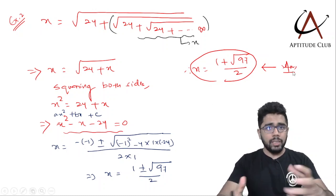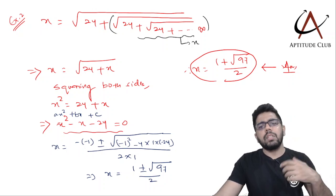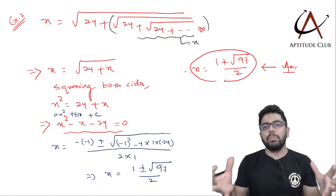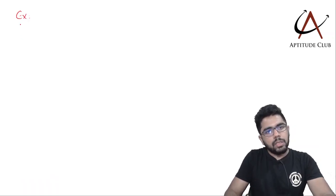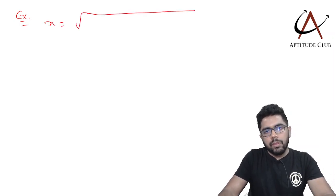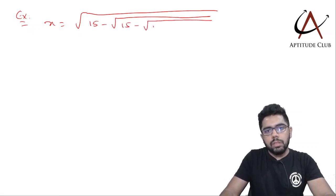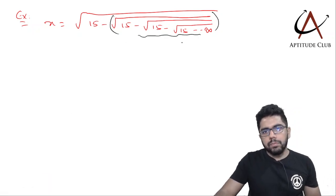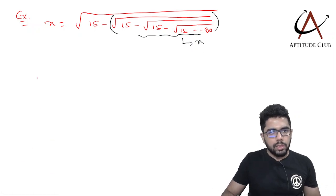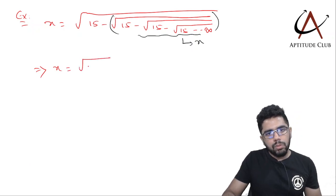This is the general approach of solving such questions. The same type of question can also be given with a minus sign. For example: x = √(15 − √(15 − √(15 − √15 ...))) and so on till infinity, with a minus sign throughout.